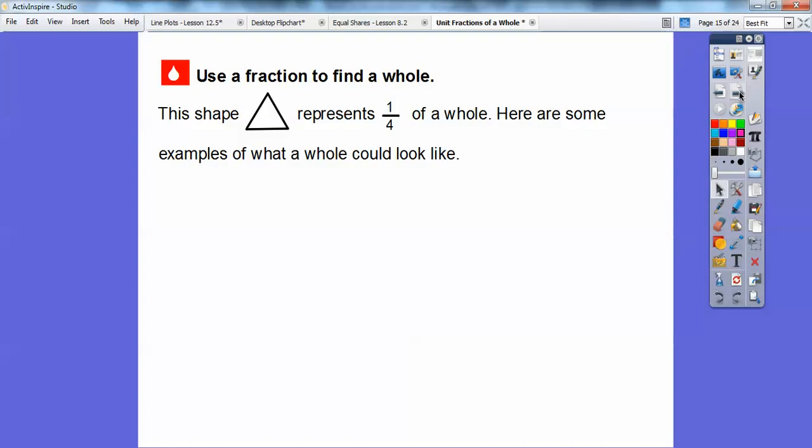Here's a unit fraction to find a whole. This shape right here, this triangle, represents 1 fourth of a whole. Here are some examples of what a whole could look like. If this is 1 fourth of it, then we need 4 of them to make a whole. So, it could look like this.